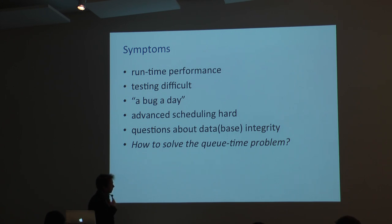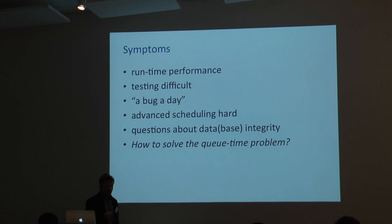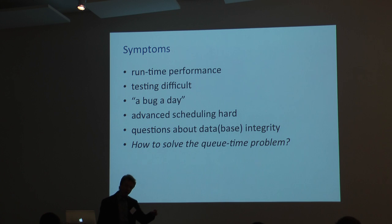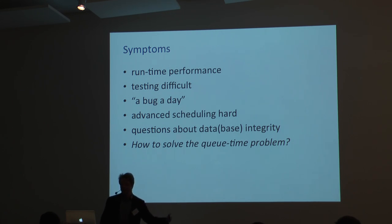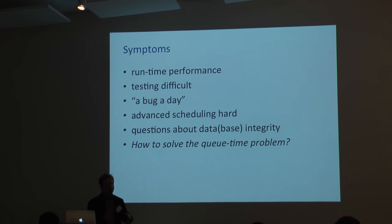We came to the conclusion that the only solution to the Q-time problem is to simulate the fab. The idea is: you have this decision about whether to put a lot into a Q-time zone, and you only want to put it in if you know it's going to make it out successfully. One way to find out is to simulate the fab and see if that lot is going to make it. If it doesn't, you just wait a little while, hold it back, and try again later. But there's this problem: how do you build a simulator as part of the running system when your entire state is in the relational database?